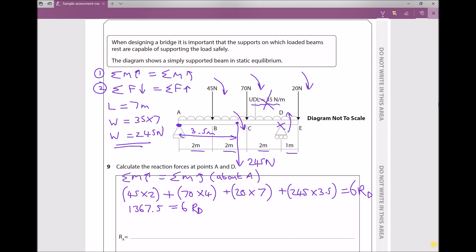Well what we have here is a simple linear equation. If we want to get RD on its own, all we need to do is divide each side by 6. So the reaction at D equals 1367.5 over 6, which gives us 227.9, we'll just go to one decimal place, 227.9 newtons.